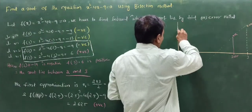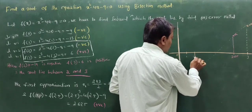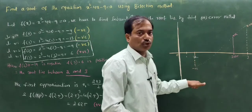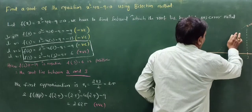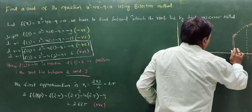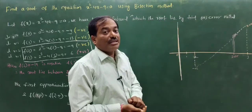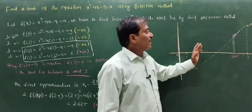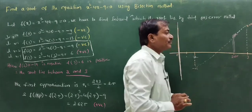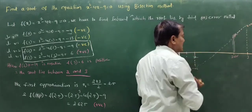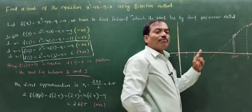We can draw a graph: at x = 2, the function has a negative value so the point is in the fourth quadrant, and at x = 3 the value is positive so it is in the first quadrant. The graph of the function intersects the x-axis at some point between 2 and 3 — that is the root we are searching for using the bisection method.